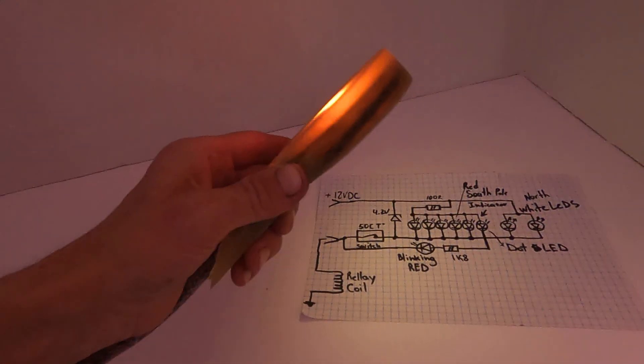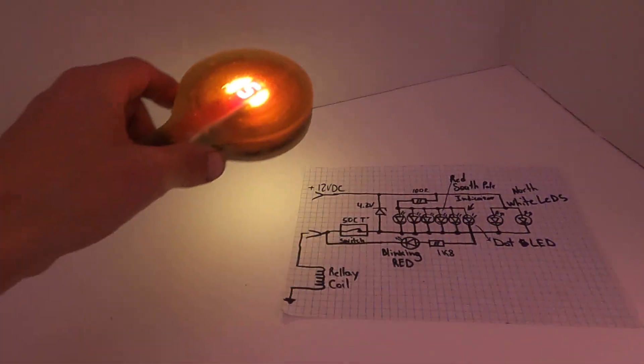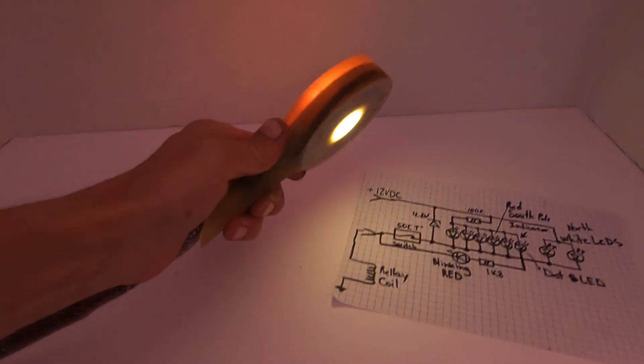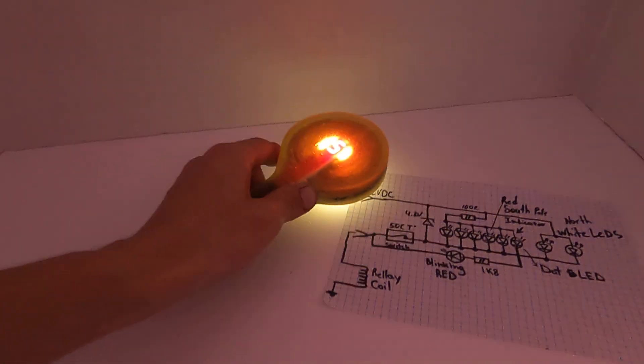Here we go. So this is the south pole indicator and this is the north side. It works like a small flashlight. Doesn't produce much light, but at night you will be able to see it.